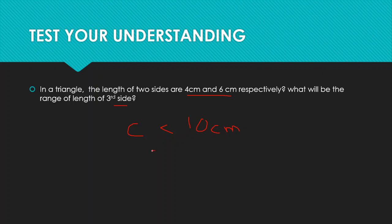The absolute difference is 6 minus 4, which is 2 cm. So C is greater than 2 cm and smaller than 10 cm. We can represent this as: C is greater than 2 cm and less than 10 cm, so the range of C is anywhere greater than 2 cm and less than 10 cm.